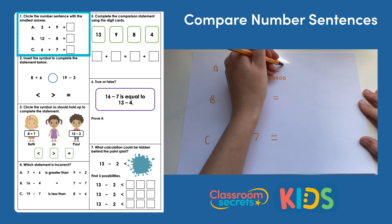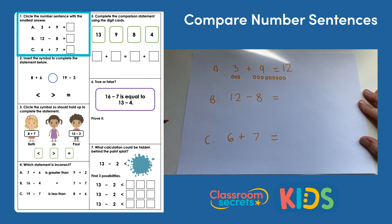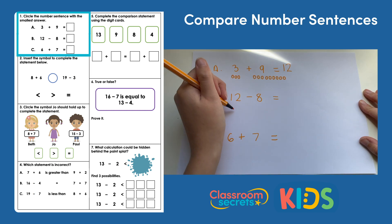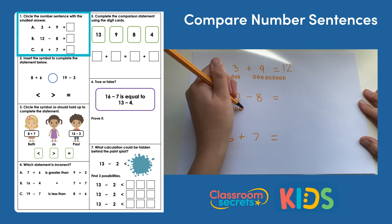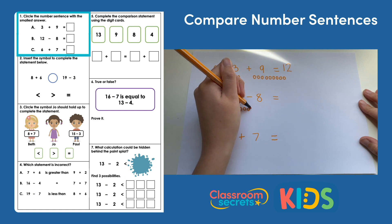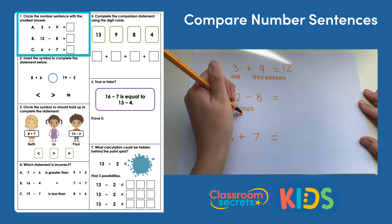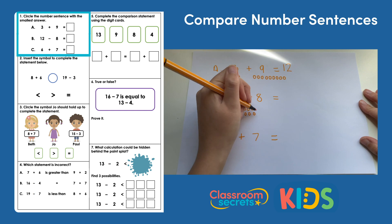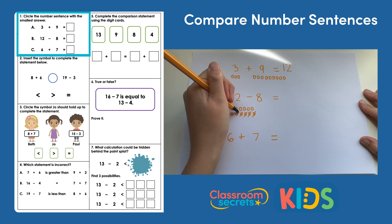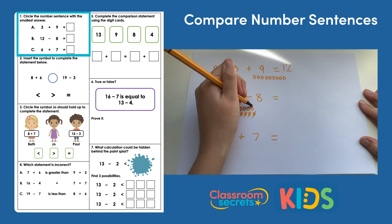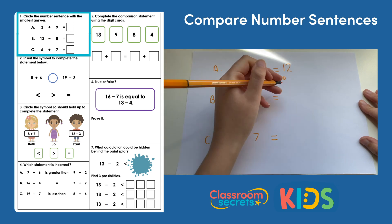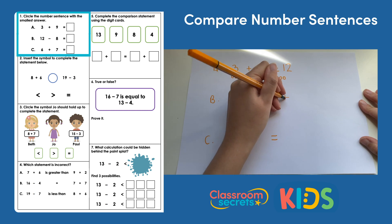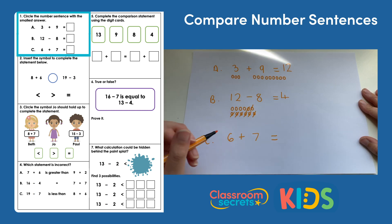Nine, ten, eleven, twelve. My answer is twelve. Okay, b we've got twelve take away eight, so that's twelve dots. Subtract eight, so I'm going to cross eight out. That leaves me one, two, three, four remaining. Okay and the last one, six plus seven, so six dots and seven more.